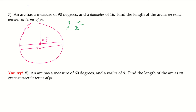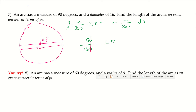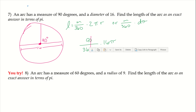The length equals M over 360 times 2πR, or since we have the diameter, we can use M over 360 times Dπ. So we have 90 over 360 times 16π. Since we're keeping the answer in terms of pi, we simplify the fraction: 90 over 360 reduces to 1 fourth. Then 1 fourth times 16π — since 4 goes into 16 four times — gives us 4π.